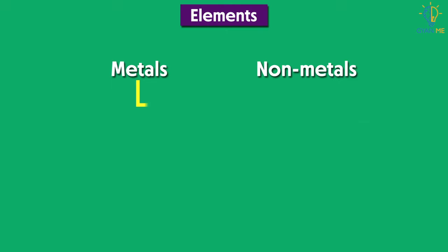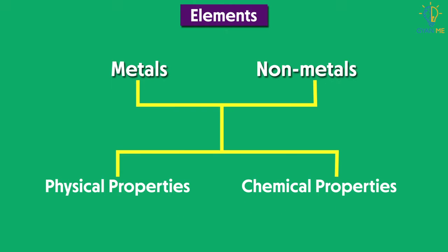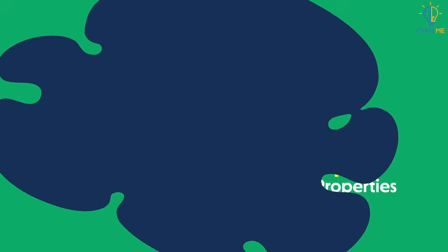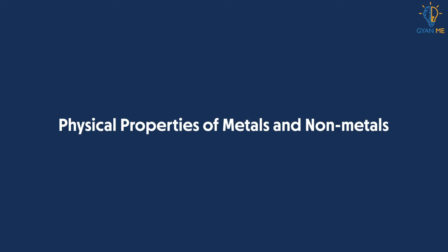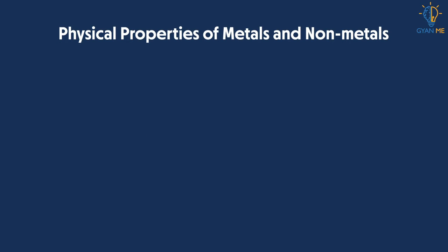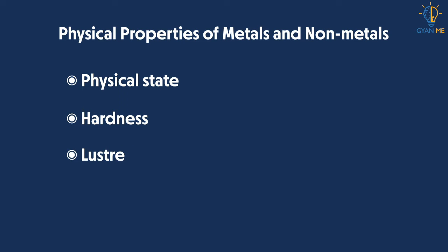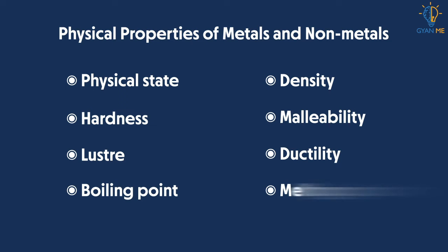So let us explore both physical and chemical properties one by one. First, let us see physical properties of metals and non-metals. Metals and non-metals have certain physical properties like physical state, hardness, lustre, density, malleability, ductility, boiling point, melting point, etc. Let us understand them one by one.